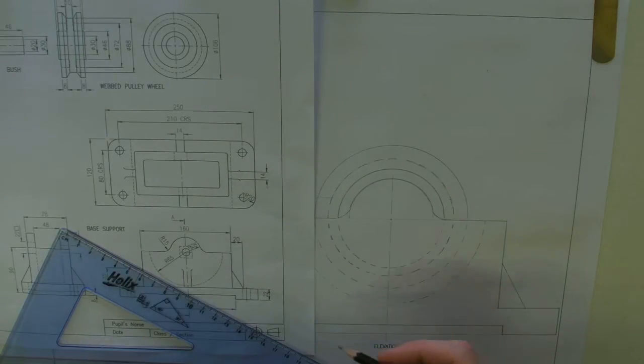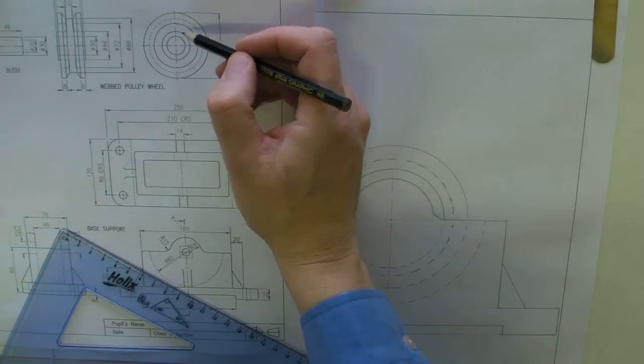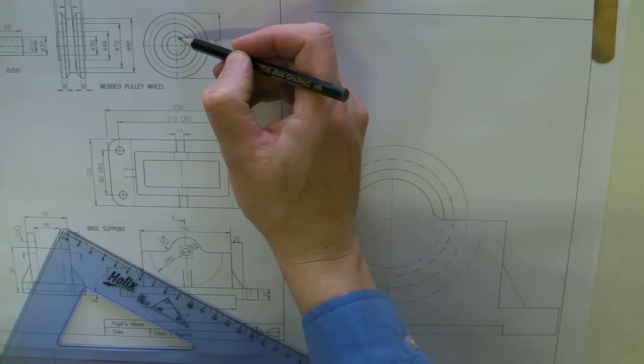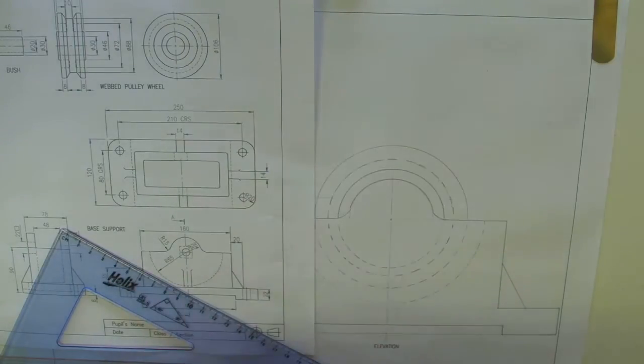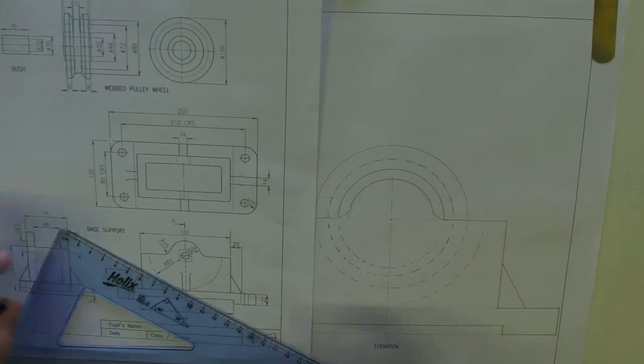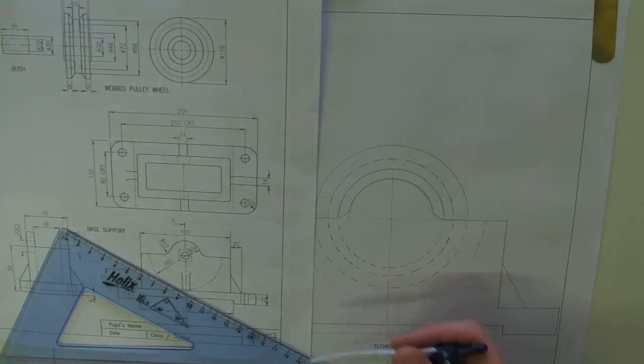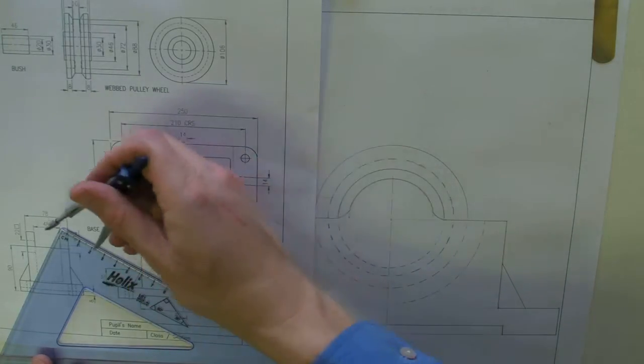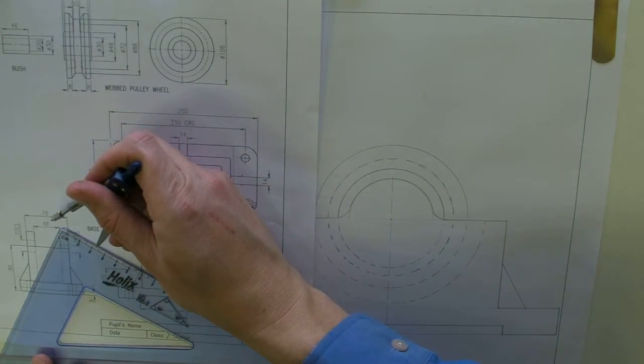So we just need to make our way through all the circles. And we've got one at 46 and one at 30 that are seen as well. So they won't be seen though in this, obviously, because it's hidden. So the one at 46 will do. So that's 23.